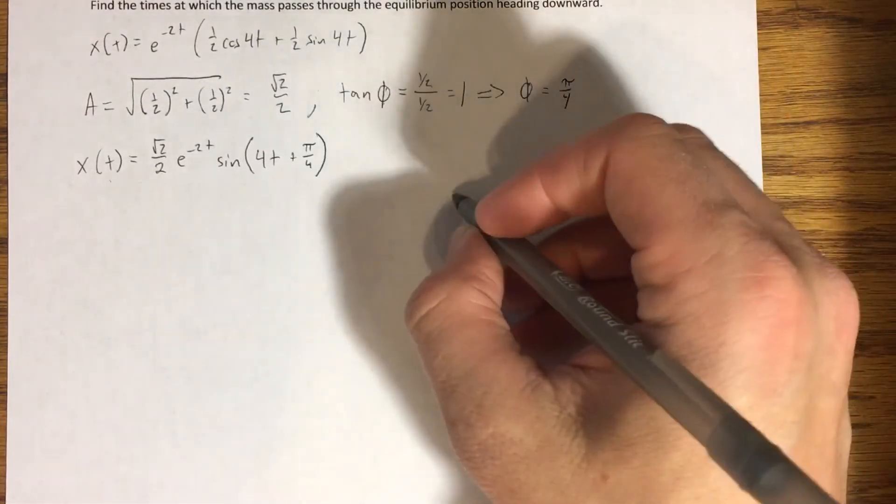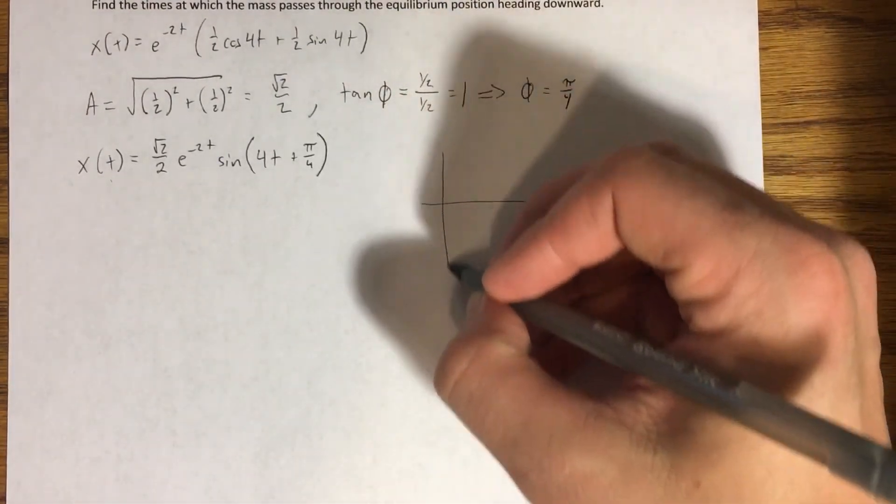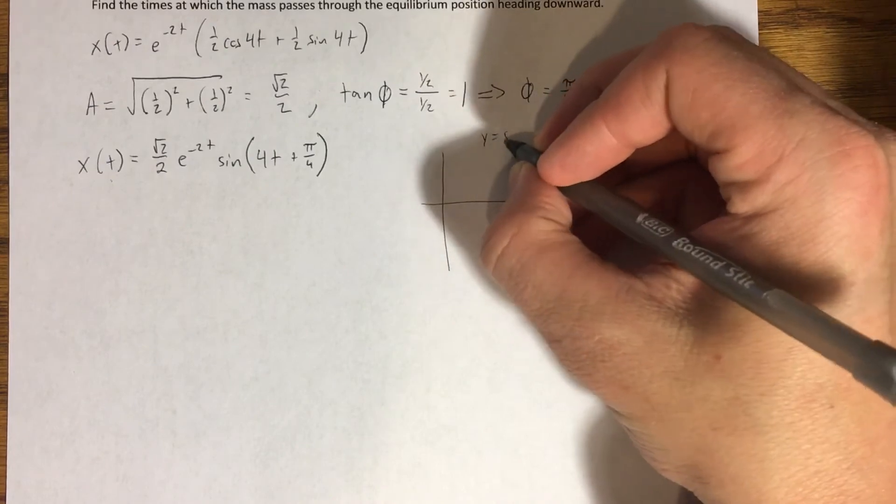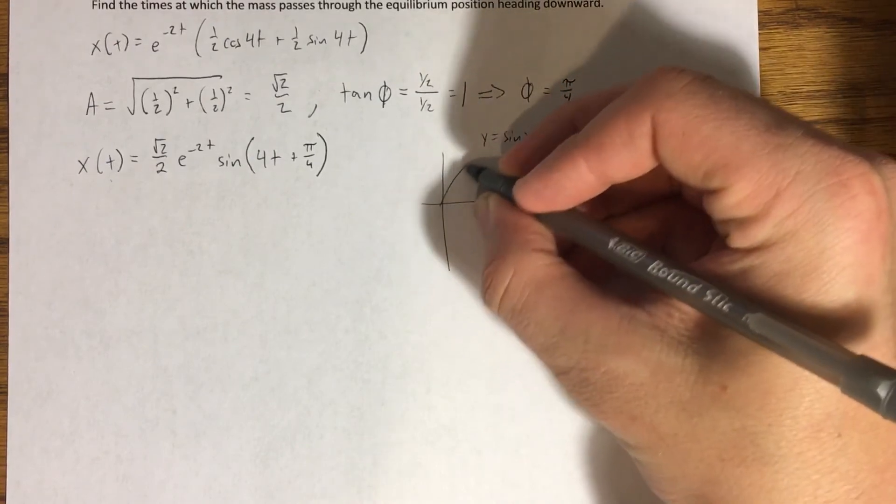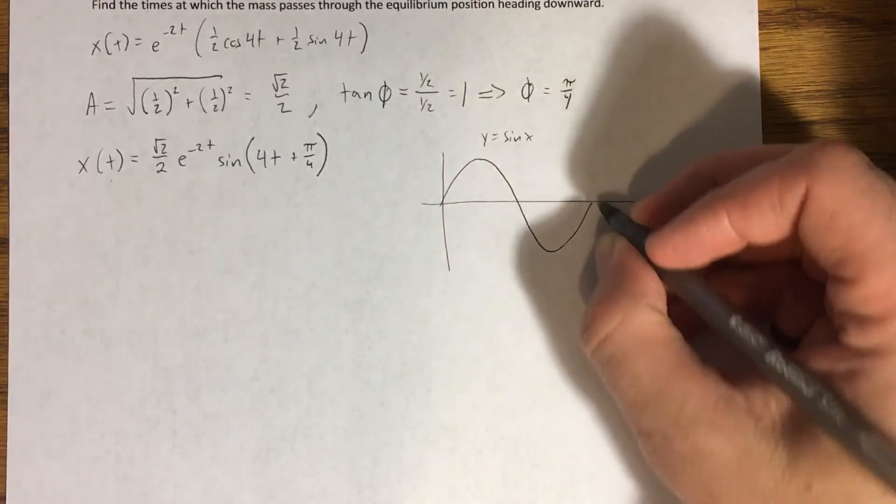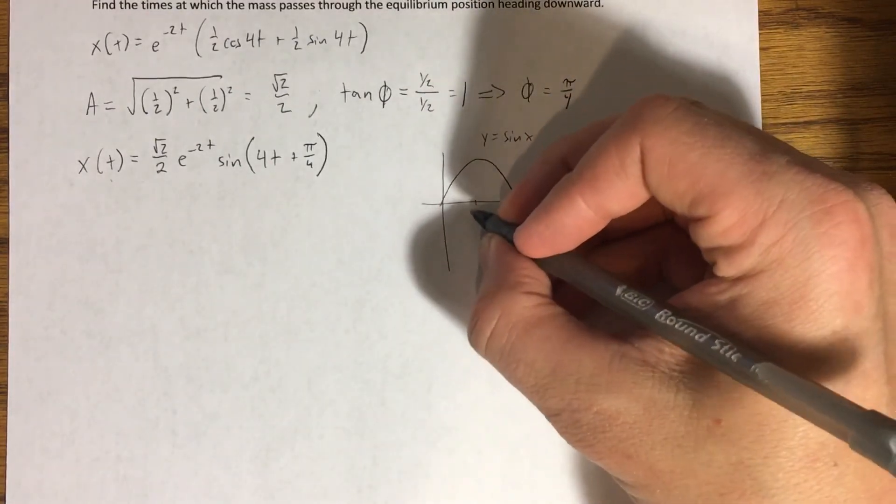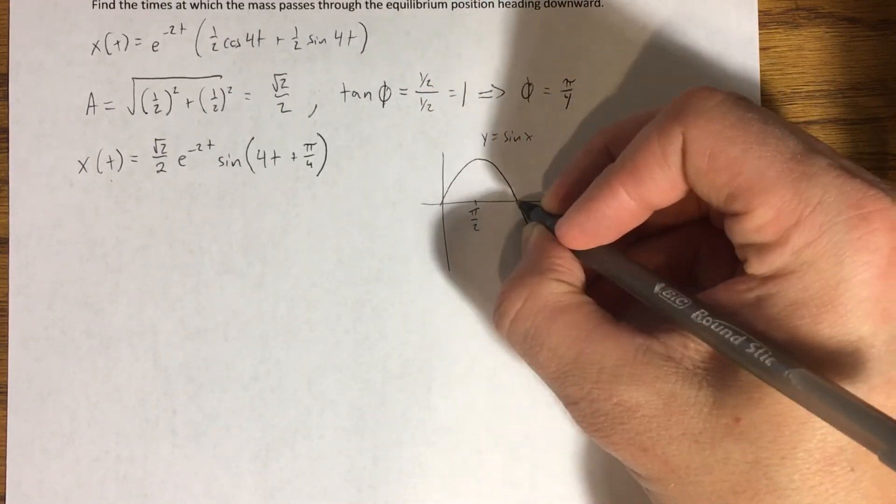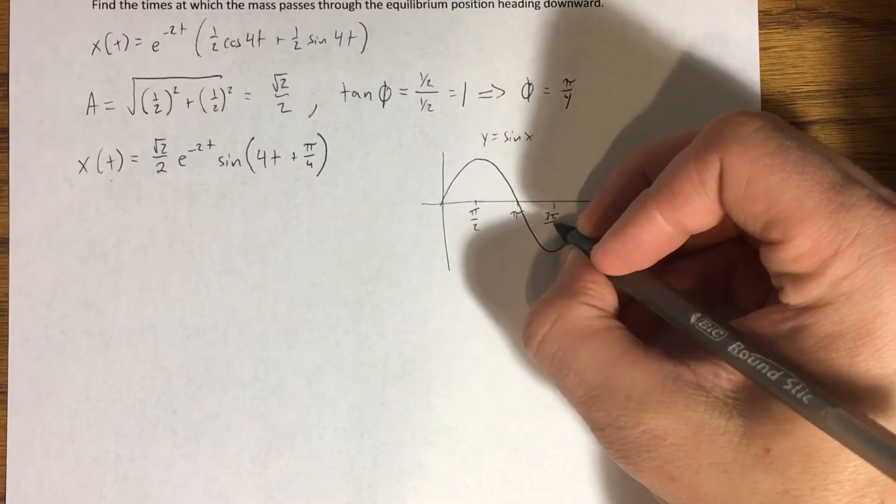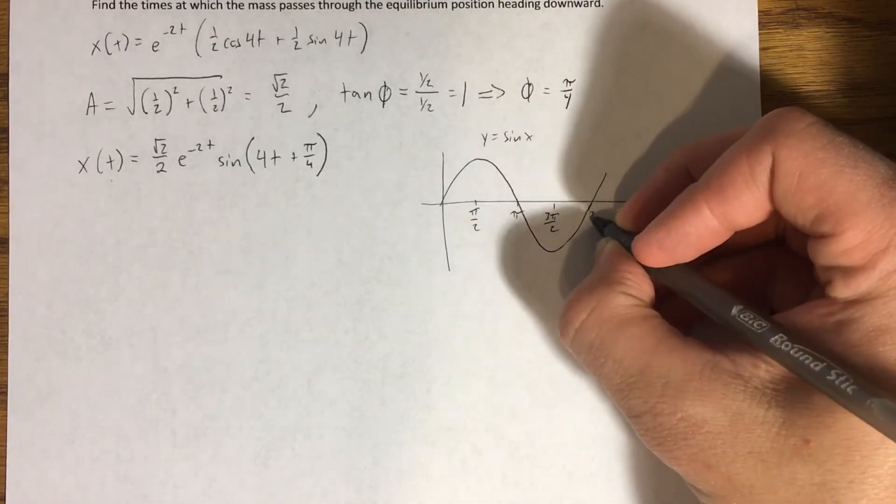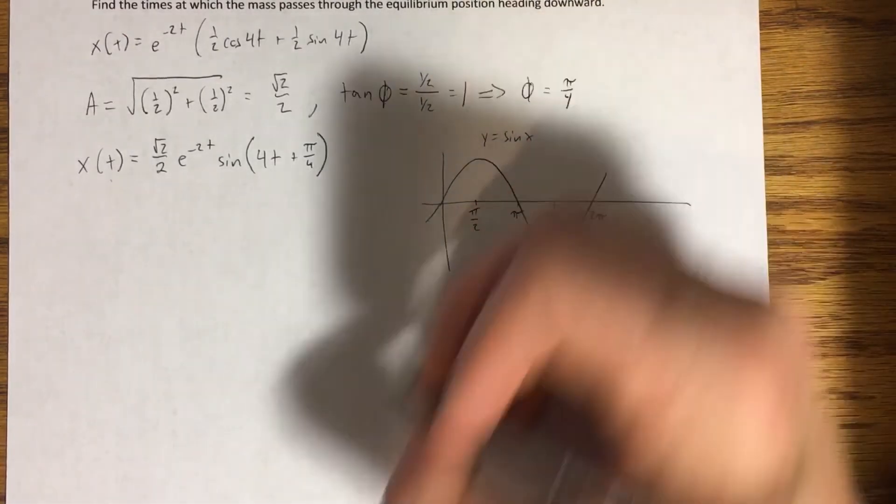But let's look at this the way that we would analyze just the regular sine function. If I'm graphing y equals sine of x, I know that that function looks like this. That's one cycle of that function. And I've got some important values here, pi over two, pi, three pi over two, two pi. This keeps going that way.